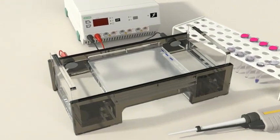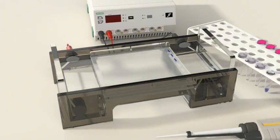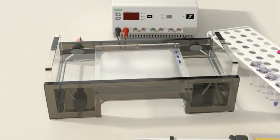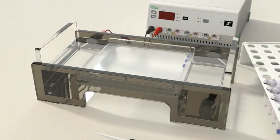Gel electrophoresis is the process used to separate fragments of DNA according to their size and shape. In this example,